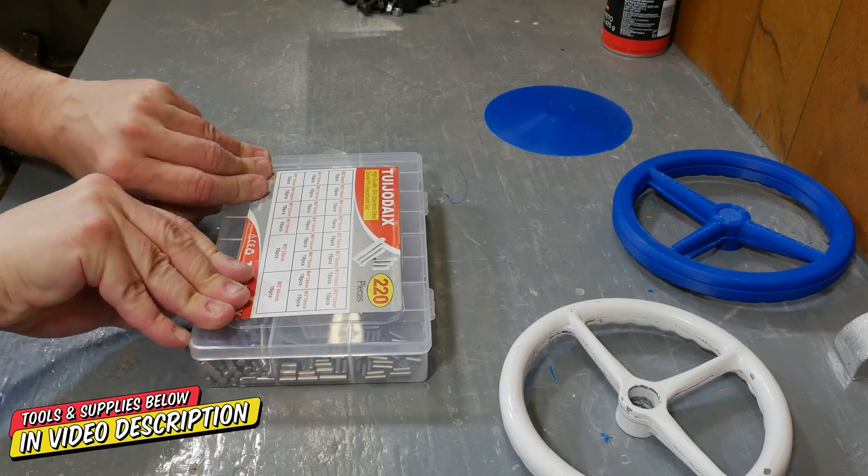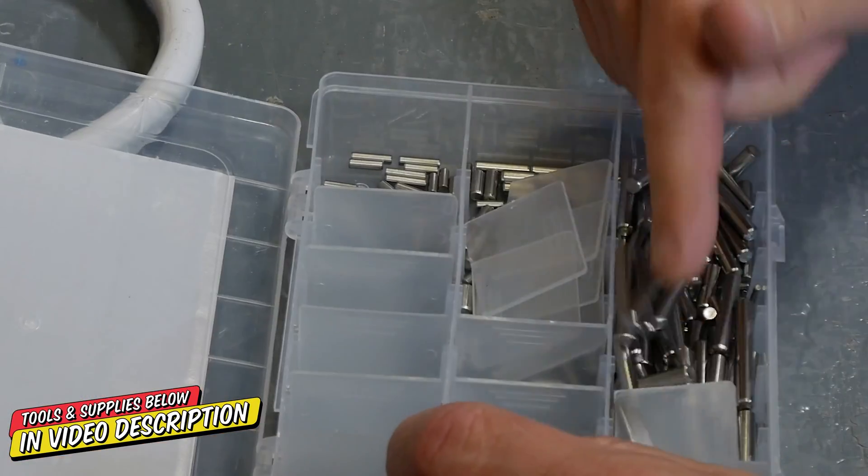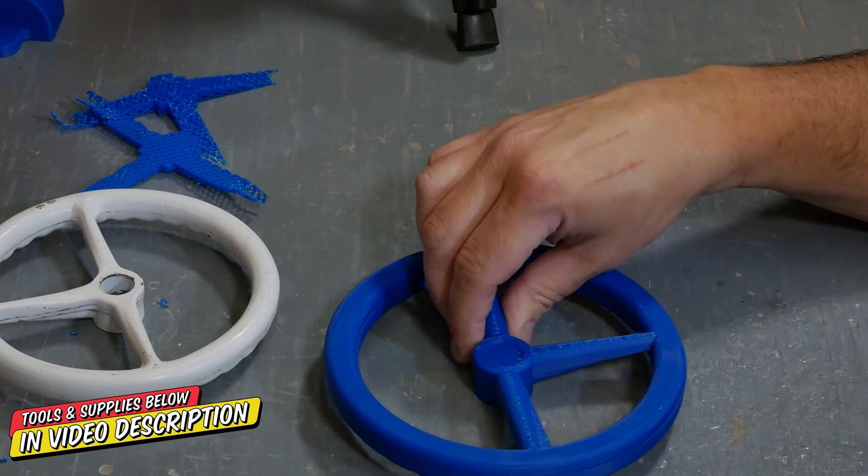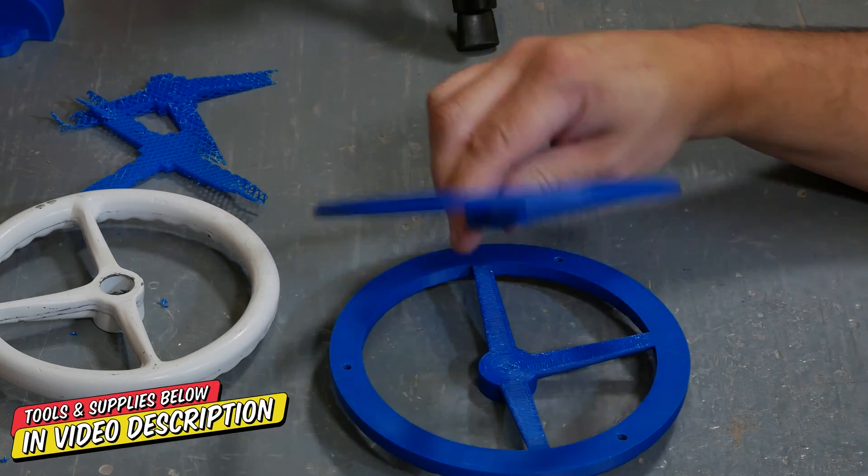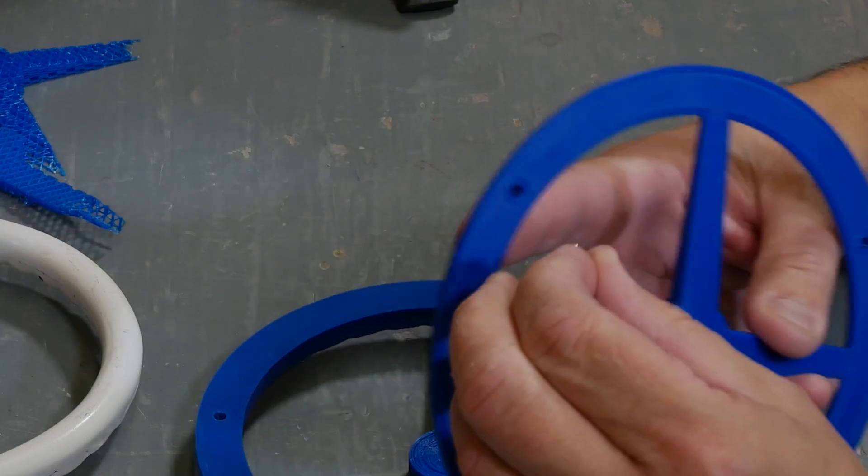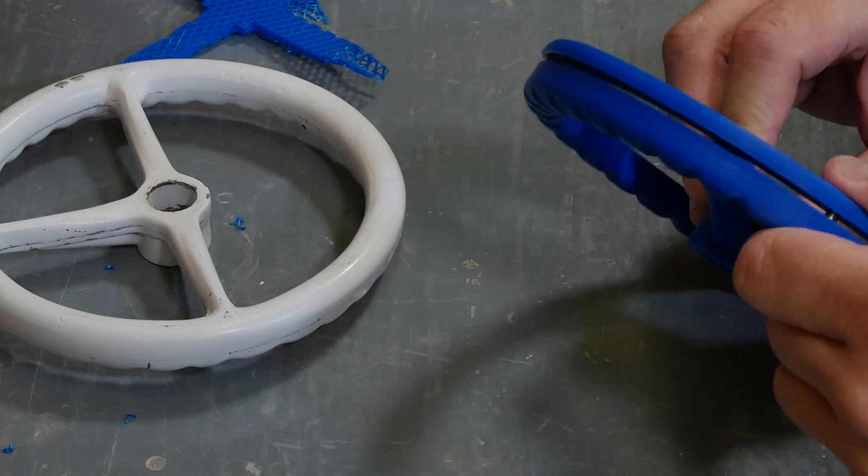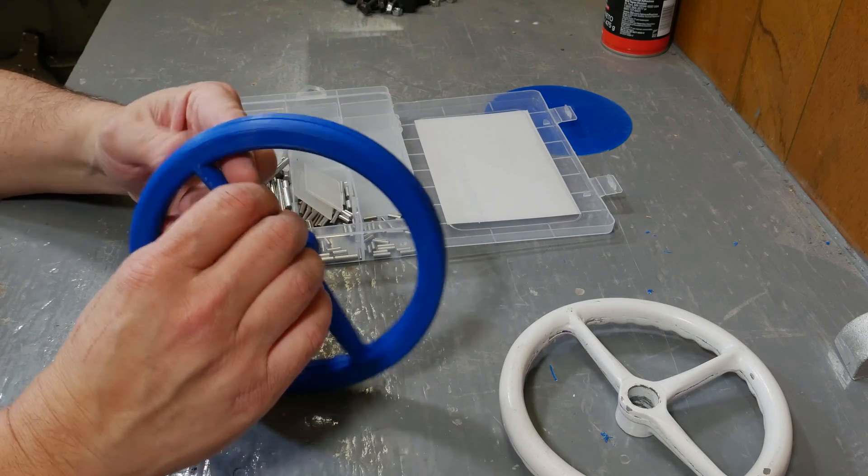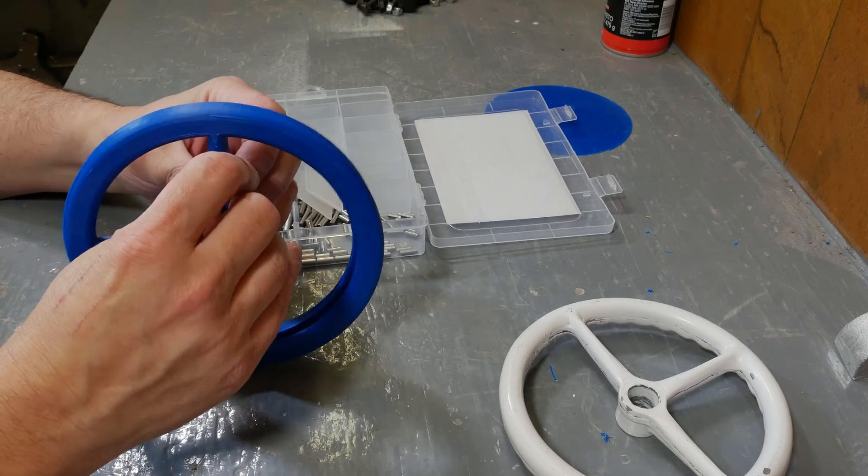I bought this set of dowel pins and it arrived just all scrambled up. But what I wanted them for was a way to pin these two halves of the steering wheel together. I think they're going to work just fine for that. These are just for alignment. But we have a lot of sanding to do before we're ready for that part.